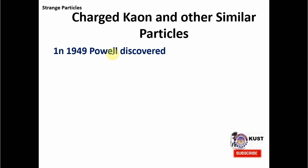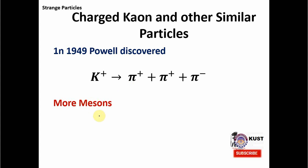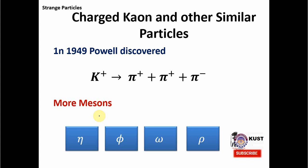The story went on getting complicated by the discovery of other new particles — for example, charged kaons and other similar particles. In 1947, Powell and his colleagues discovered another kaon, which is a charged kaon that decays into three pions. So the list extended from 14 to 16. But this was not the end of the story, and we discovered even further mesons, with the number going up and up.